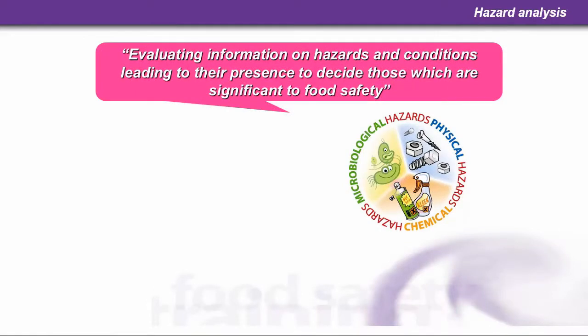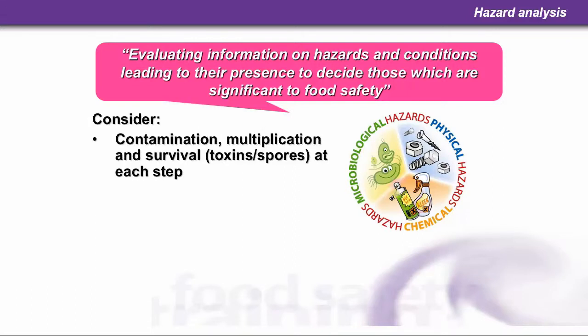Hazard analysis — the definition is evaluating information on hazards and conditions leading to their presence, to decide which are significant to food safety. The different hazards, shown in the graphic, include microbiological, physical, and chemical hazards. You need to consider contamination, multiplication, and survival of toxins and spores at each step.